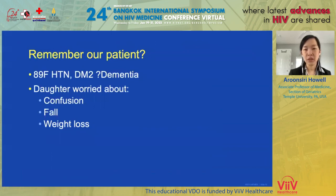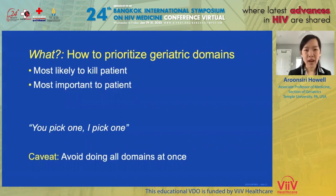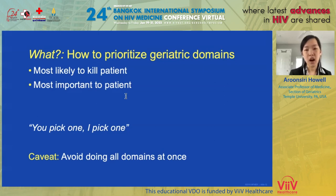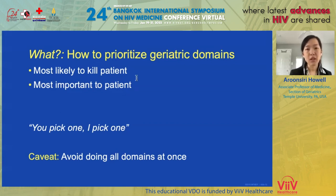Let's go back to our patient. Just a quick reminder — Mrs. H has hypertension and diabetes, and there are concerns for dementia due to confusion, falls, and weight loss at home. Now we'll talk about what — how do we prioritize which geriatric syndromes to screen for? I usually think about two things: the domains most likely to kill the patient, and the domains most important to the patient. In clinic, I'd sit down with the family and patient and say: I pick one domain and you pick one. I recommend not trying to do all the domains at once.